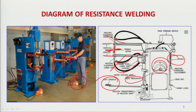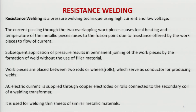I have shown this machine first so that when I define resistance welding, you can easily understand it. Resistance welding is a pressure welding technique using high current and low voltage. The current passing through the two overlapping work pieces causes local heating and the temperature of the metallic piece raises to the fusion point. We are not increasing the temperature to full molten state — we only reach the fusion point due to the resistance offered by the work piece to current flow. Subsequent application of pressure results in permanent joining without the use of filler material.